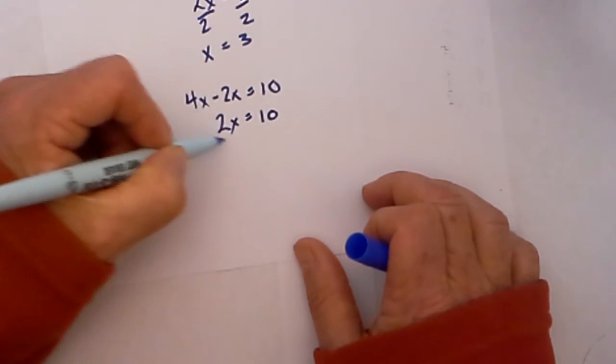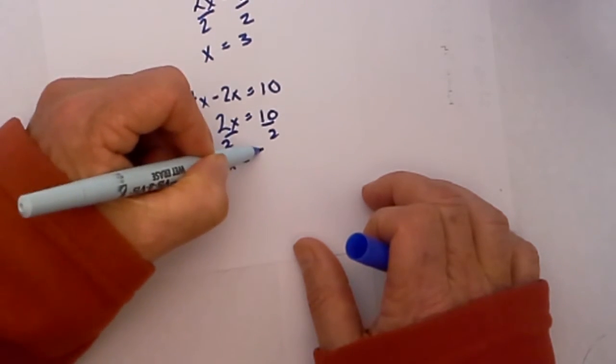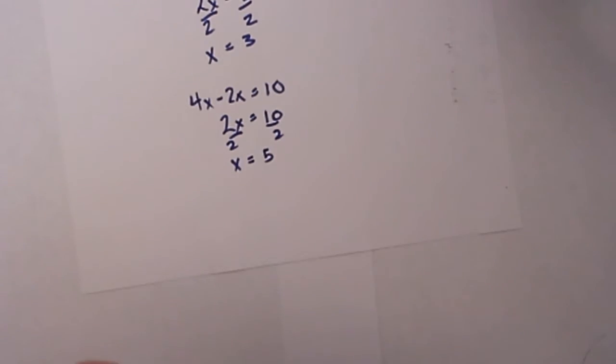2x equals 10. Divide both sides by 2 and x is equal to 5. I hope that helps.